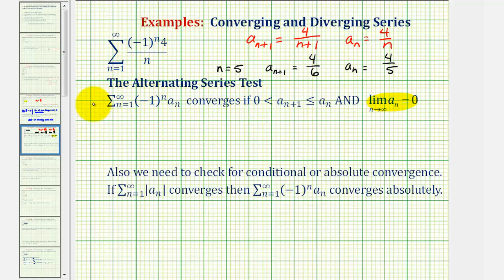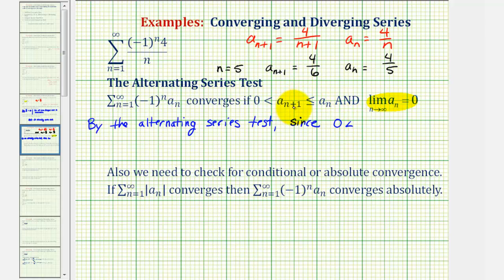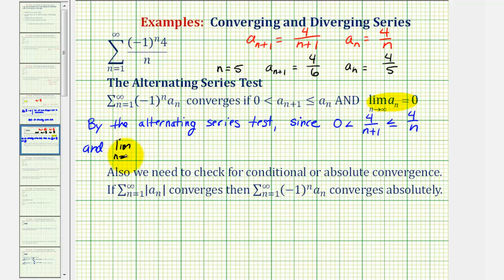By the alternating series test, since zero is less than a sub n plus one — which is four divided by n plus one — which is less than or equal to a sub n, which is four divided by n, and the limit as n approaches infinity of a sub n equals zero, the original alternating series converges.